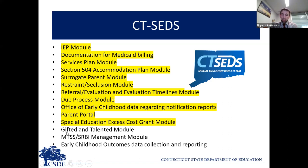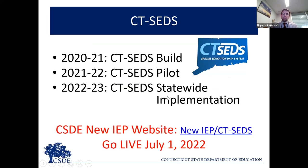The system also will contain an MTSS/SRBI/RTI module that will help support general education interventions and universal screenings. That will be rolled out on July 1, 2023—a year out from our overall implementation. To summarize the timeline: we've been in process with PCG since late 2019 and early 2020, where we began to build the system. This year we're piloting the system, and then we have statewide implementation in 2022–23.